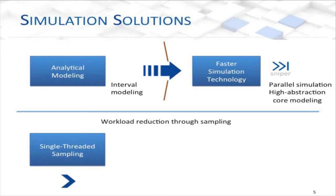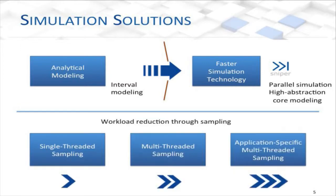Ten years ago, there were a lot of papers on sampling — SMARTS, SimPoint — but there were some limitations with those works. They don't fully support multi-threaded applications, and the updates to SMARTS only support server workloads. So how do you support the applications that are going to be the target workload for multi-core systems?